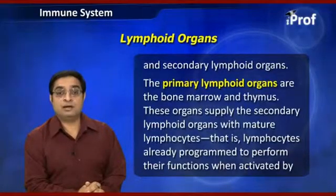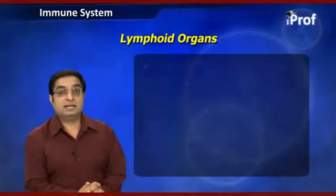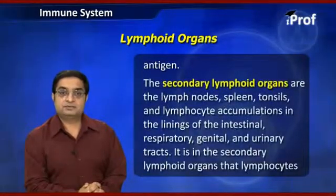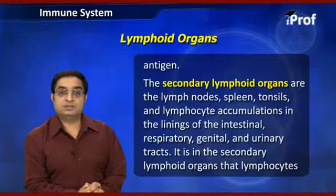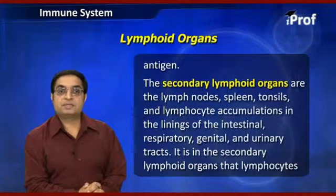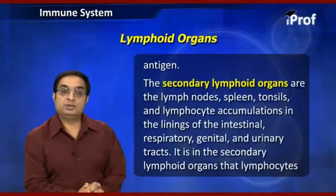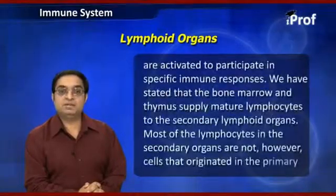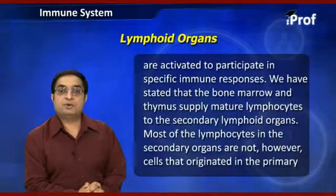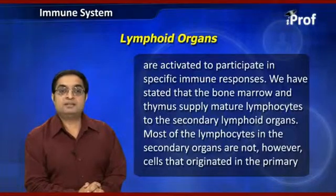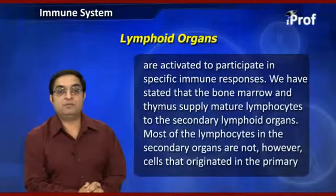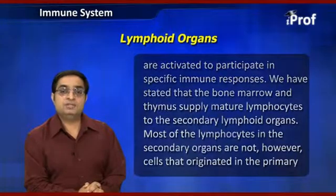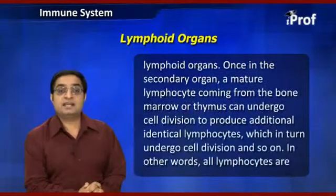The secondary lymphoid organs are the lymph nodes, spleen, tonsils, and lymphocyte accumulations in the linings of the intestinal, respiratory, genital, and urinary tracts. It is in the secondary lymphoid organs that lymphocytes are activated to participate in specific immune responses. Most lymphocytes in the secondary organs are not the cells that directly originated in the primary lymphoid organs, since once in the secondary organs a mature lymphocyte can undergo further cell division.